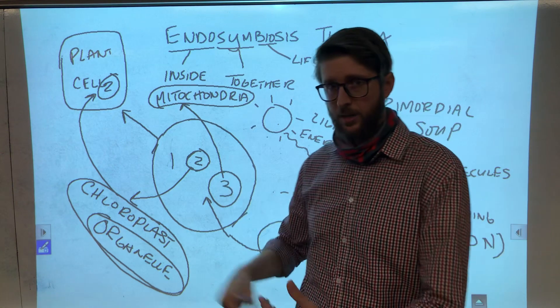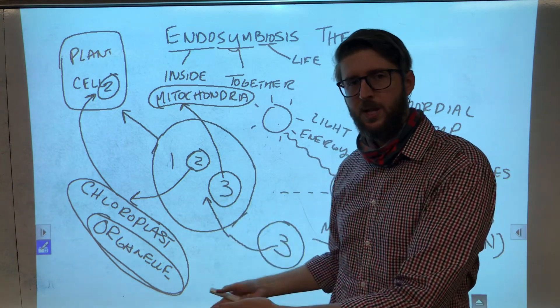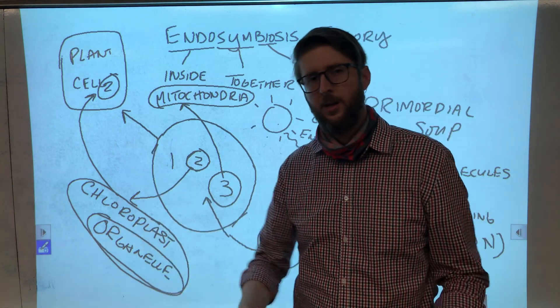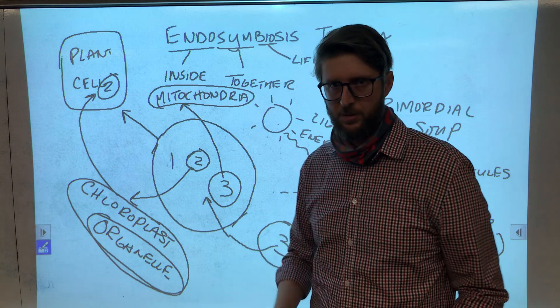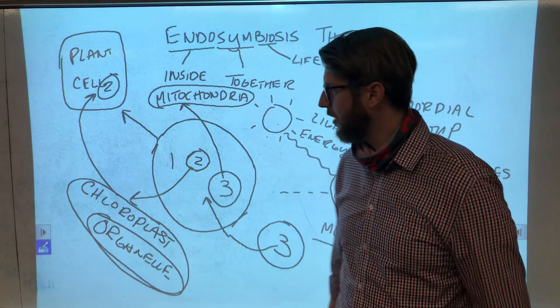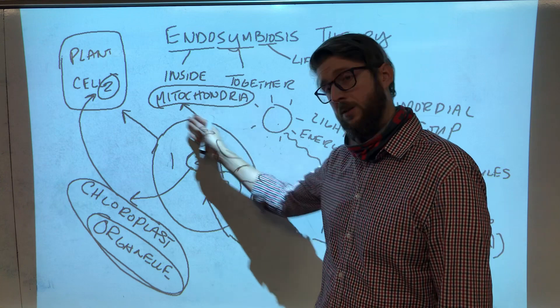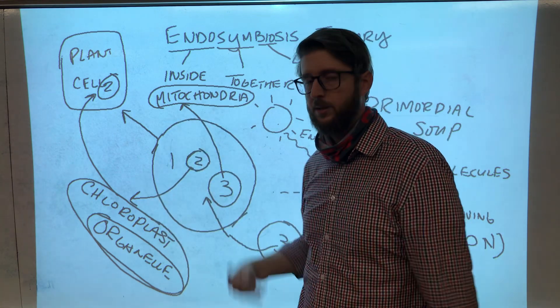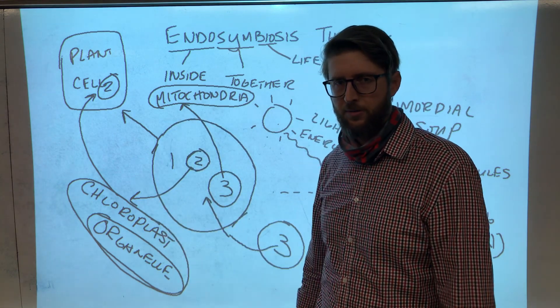It's another type of organelle that exists in animal cells. And that actually creates energy. Instead of using sunlight, it actually creates energy from chemicals. So it just converts one type of chemical energy into another type of energy that your cells in your body use to power their functions.